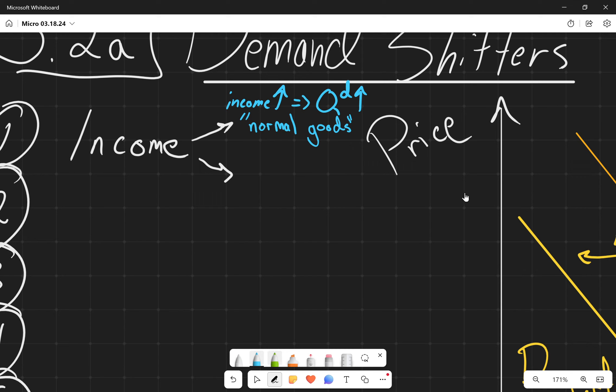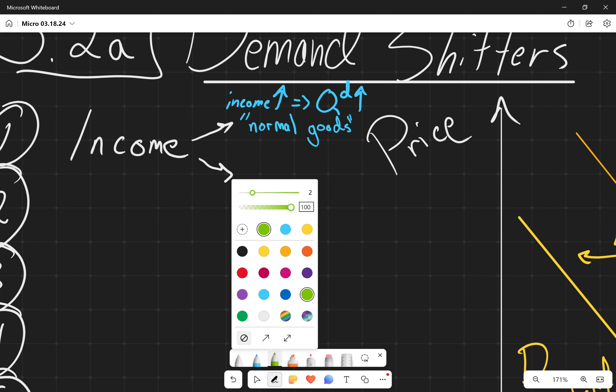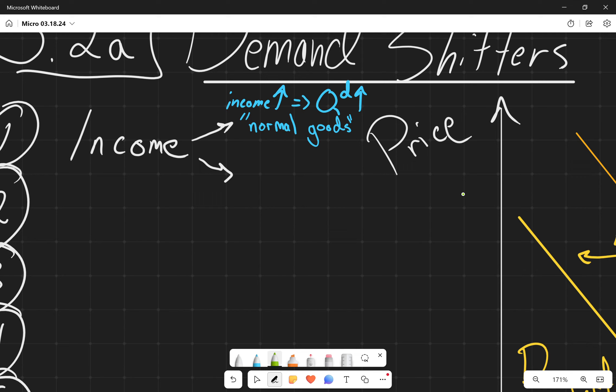And then the other type of goods that we'll talk about, if we have income increasing, now the quantity demanded is decreasing for these particular goods. And so the classic example used here is spam, right? Canned meat. Really just canned goods, right? Typically, as people make more money, they stop buying canned vegetables and start buying fresh or frozen vegetables and stuff like that.